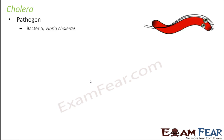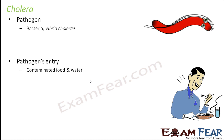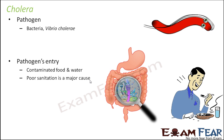Cholera is caused by a bacteria called Vibrio cholerae, and it also reaches our body through contaminated food and water. Poor sanitation is one of the major causes of cholera. It is very common in areas where proper sanitation facilities are not available. In many remote areas, proper clean toilets are not there, so people defecate in open fields — a very unhygienic condition that can give rise to many diseases, which is why cholera is very common in such regions.